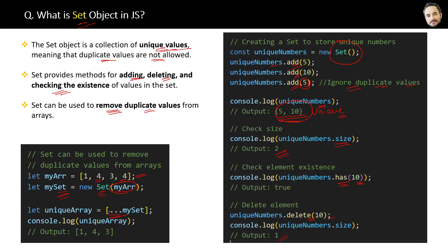You can use the spread operator and square brackets to convert the Set back into an array and assign it to a new unique array. If you log it, you will see that this new unique array will only contain the unique elements. That is the great use case for Set — now it's set and fixed in your mind!